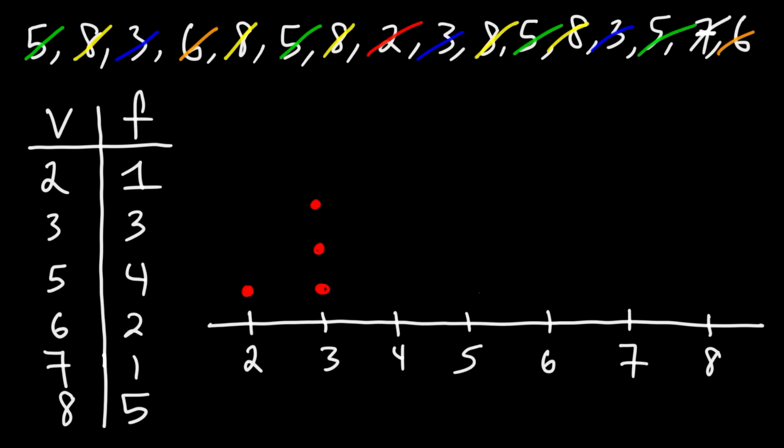We have 4 fives, so 1, 2, 3, 4. We have 2 sixes, 1 seven, and 5 eights. And so that is how you can make a dot plot.